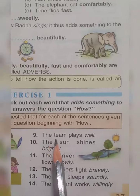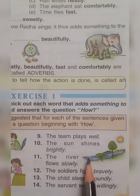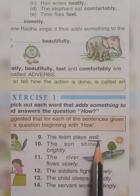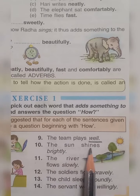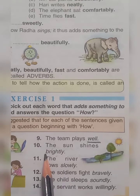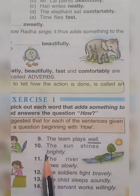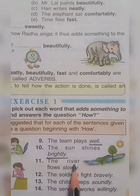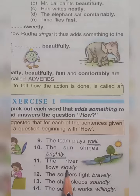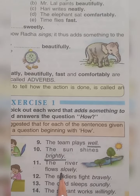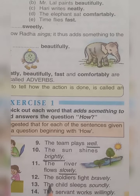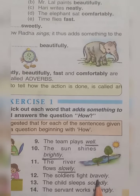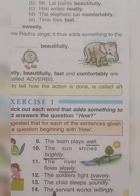Number 9: The team plays well. How does the team play? Well. Underline 'well.' Number 10: The sun shines brightly. How does the sun shine? Brightly. Underline 'brightly.' Number 11: The river flows slowly. How does the river flow? Slowly. Underline 'slowly.' Number 12: The soldiers fight bravely. Underline the word 'bravely.'